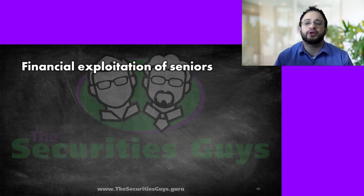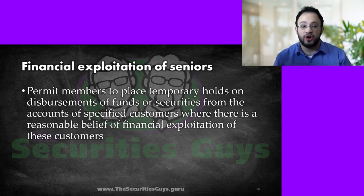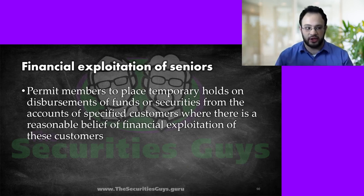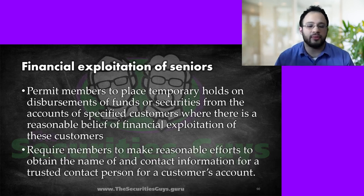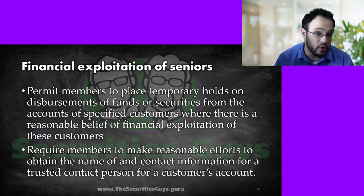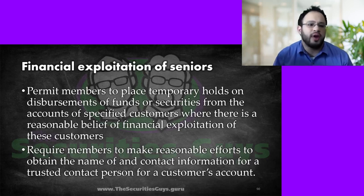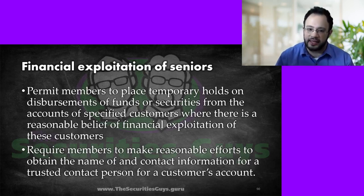Financial exploitation of seniors: these rules permit members to place temporary holds on disbursements of funds or securities from accounts of potentially exploitable seniors where there is reasonable belief of financial exploitation. It requires members to make reasonable efforts to obtain the name and contact information for a trusted contact person. If one of your elder clients suddenly has a new aide coming everywhere with them and trying to take out money seemingly because the aide wants them to, you may need to report that and have a system where you contact the client's kids or other trusted contacts.